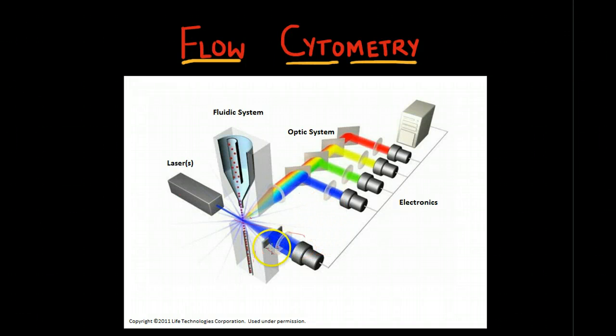We have our optical system, which is several mirrors that deflect the light. These lights are then detected by a set of detectors, which convert that analog signal into a digital signal. Then there's an amplification system that amplifies that signal, and a computer for analysis.